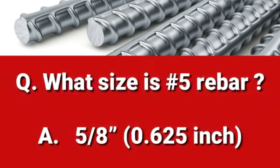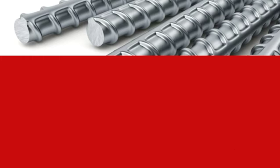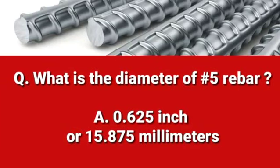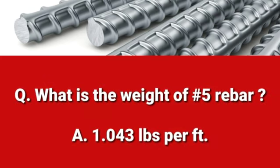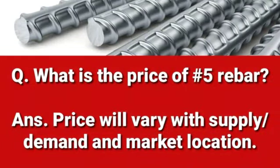To summarize: the size of number five rebar is 0.625 inch; the diameter of number five rebar is 0.625 inch or 15.875 millimeters; and the weight of number five rebar is 1.043 pounds per foot.